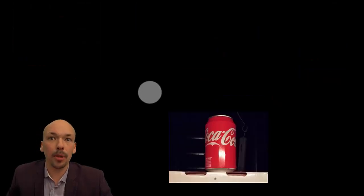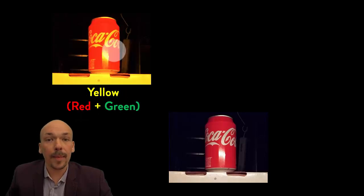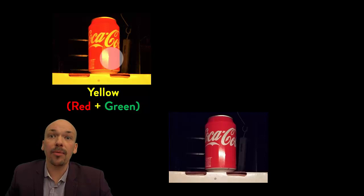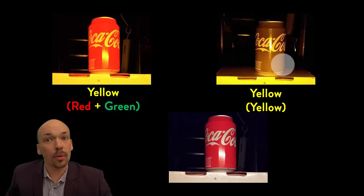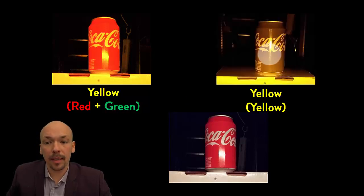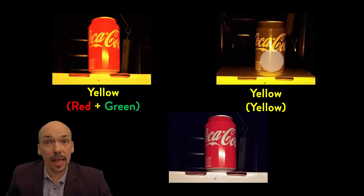Now I will show you the difference between pure yellow light and yellow light made from red and green. If we have yellow light which actually contains red and green light, then the can will look red, as I showed previously. But if we have another yellow light which is purely yellow — so there are no red and green lights in it, only yellow — then it will look different. The can now cannot show that it's red, because it doesn't get red light, it only gets yellow. So it appears gray-yellowish, and you don't see what the correct color is.